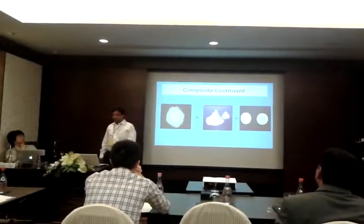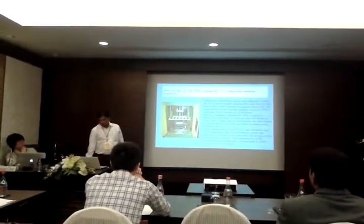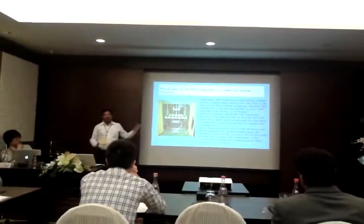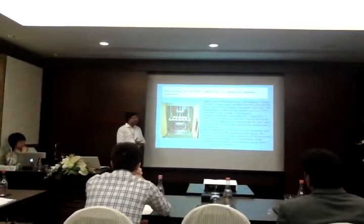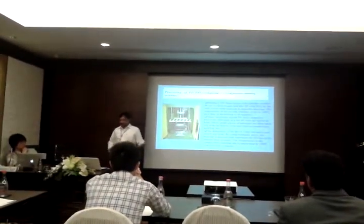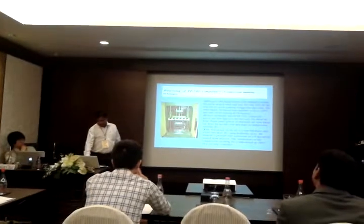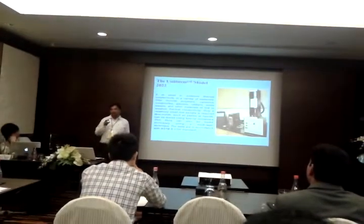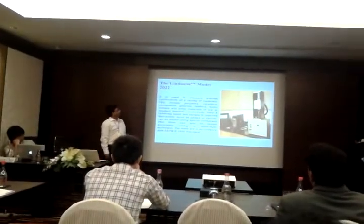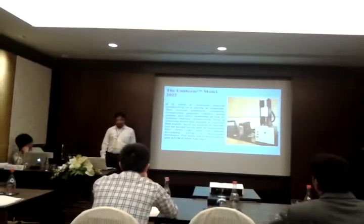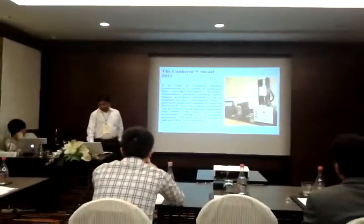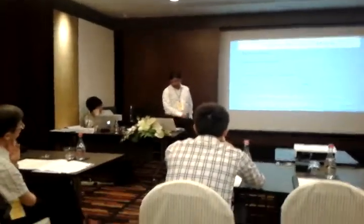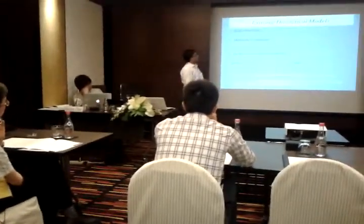There are procedures like injection molding, compression molding, and hand lay-up routes. Because this is a thermoplastic polymer material, we go for the compression molding route. This is the picture of the compression molding machine that is in our laboratory. After making the composite, we measure the thermal conductivity using the Unitherm TM2022 model — an instrument to measure thermal conductivity based on one-dimensional heat flow. By using the Fourier equation, we get the thermal conductivity.